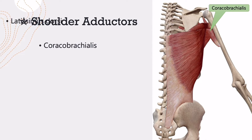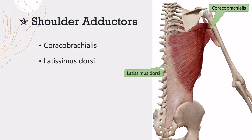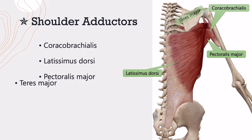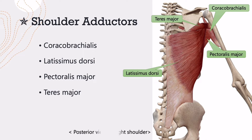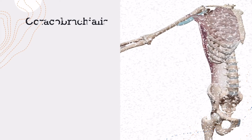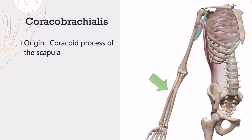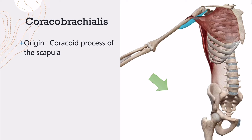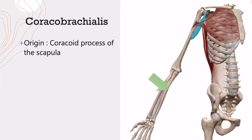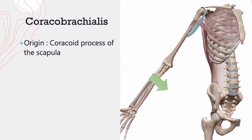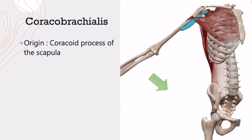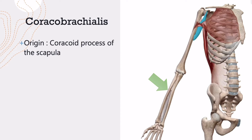There are four main muscles: coracobrachialis, latissimus dorsi, pectoralis major, and teres major. Coracobrachialis originates from the coracoid process of the scapula and inserts at the medial surface and border of the body of the humerus.